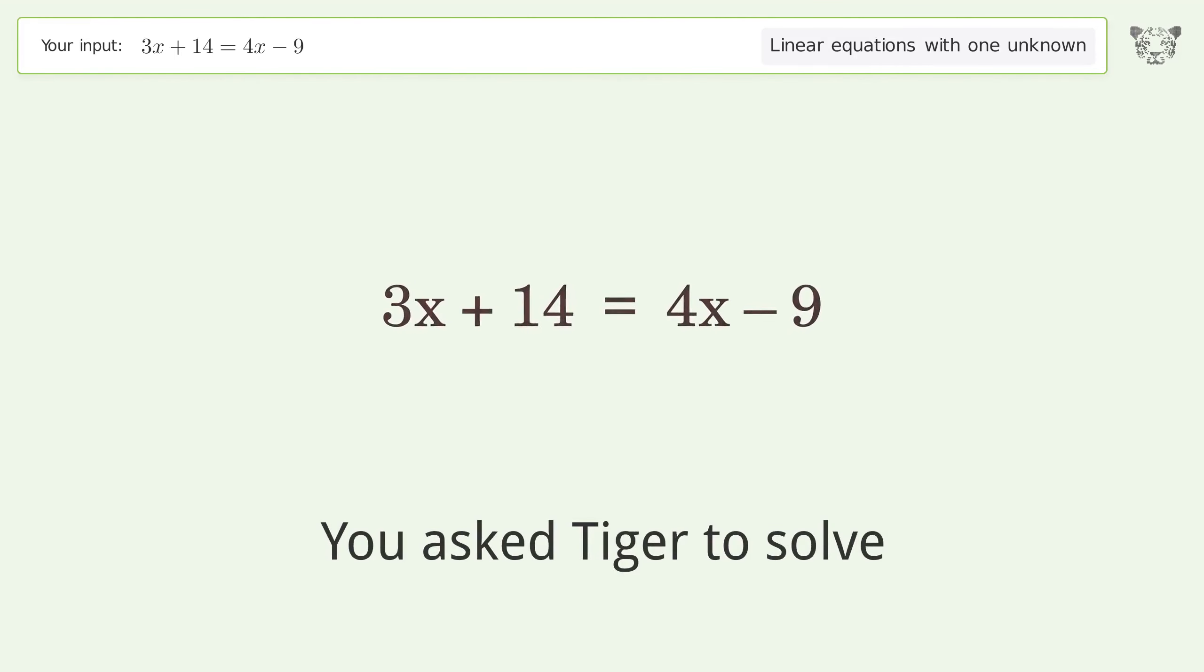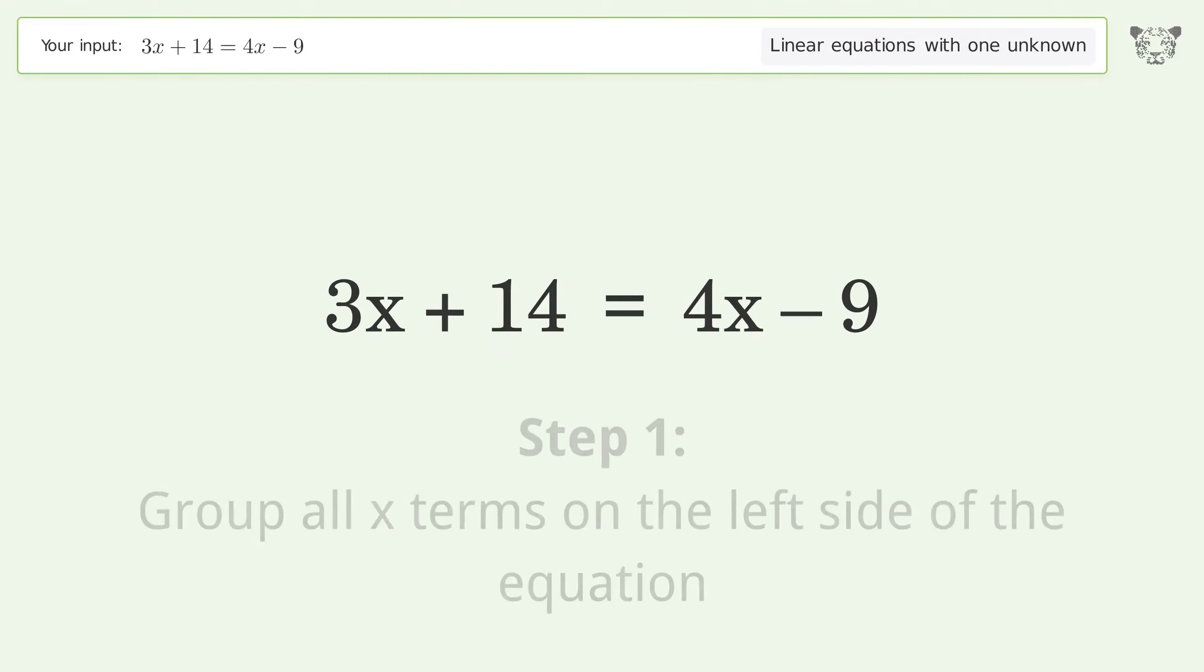You ask Tiger to solve this linear equation with one unknown. The final result is x equals 23. Let's solve it step by step. Group all x terms on the left side of the equation.